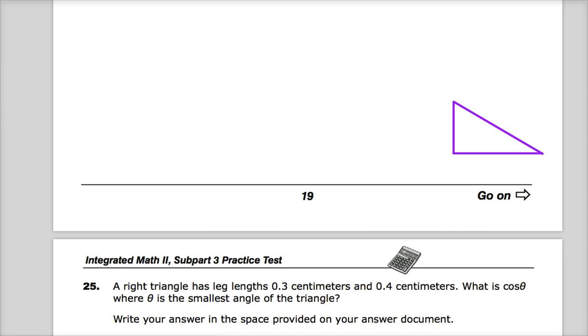So the question says a right triangle has legs of 0.3 centimeters and 0.4 centimeters. What is the cosine where the angle is the smallest angle of the triangle? Write your answer in the space provided on your answer document.